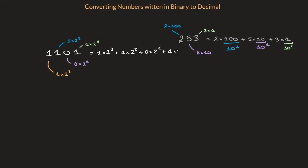plus 1 times 2 raised to the power of 0. Where the 1, 1, 0, 1 corresponds to the binary number we started off with.